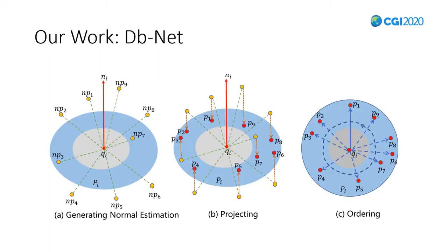After querying neighboring points using double ball queries, we need to arrange these points in a specific order before feeding to the network. In our work, there are three steps: generating normal estimation, projecting, and ordering.